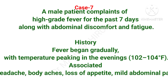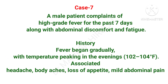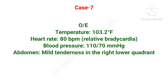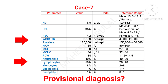A male patient complaining of high-grade fever since 7 days, along with abdominal discomfort and fatigue. Fever began gradually with temperature peaking in the evening, associated with headache, body ache, loss of appetite, and mild abdominal pain. On examination, temperature is 103°F, heart rate is about 80 beats per minute — called relative bradycardia — and there is mild abdominal tenderness. In CBC, there is a reduced WBC count and increased lymphocytes. Guess the diagnosis and what further investigations are needed to confirm.